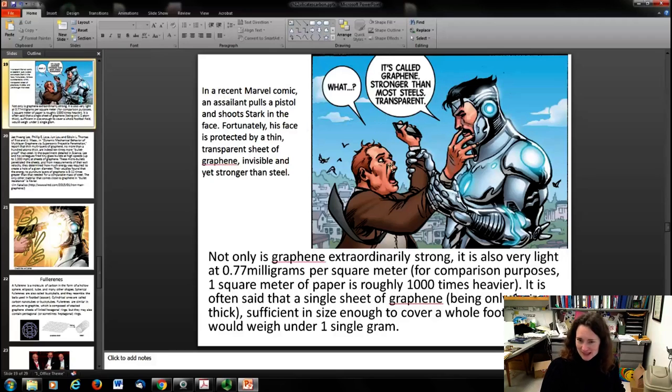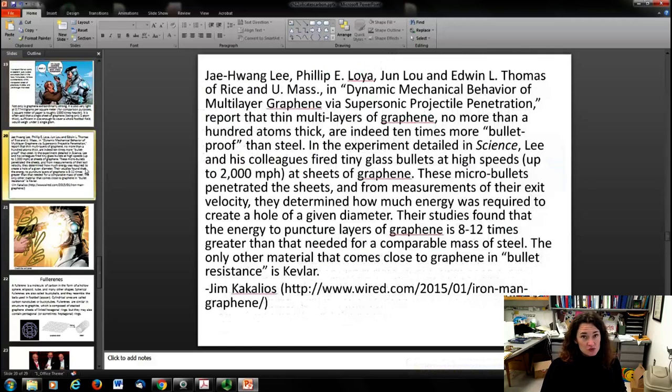Not only is it extraordinarily strong, it's also super light, at 0.77 milligrams per square meter. To compare, one square meter of paper is about a thousand times heavier. It's often said that a single sheet of graphene one atom thick, sufficient in size to cover a whole football field, would weigh under a gram. Now it's super strong, super lightweight, super thin. If you're not thinking body armor, I don't know what's wrong with you.